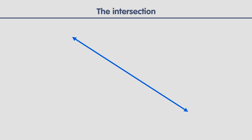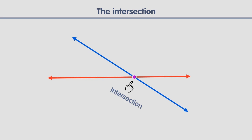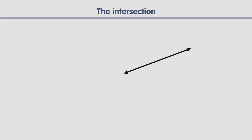When two lines meet at a common point, they are known as intersecting lines. For example, these lines cross at this point, so we say that they intersect and we call the point an intersection. But we don't always need to see an intersection when two lines intersect. For example, do these lines intersect?